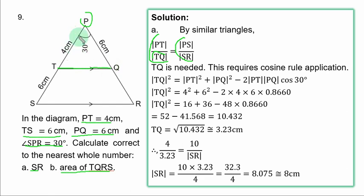Back to the ratio: 4/3.23 = 10/SR (using PS = TS + PT = 6 + 4 = 10). Making SR the subject: SR = 10 × 3.23 / 4 = 8.075. To the nearest whole number, SR = 8 centimetres.